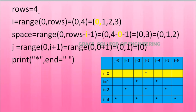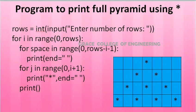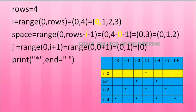Let's trace the execution with rows=4. i iterates range(0, 4), giving 0, 1, 2, 3. For i=0 (first row): space iterates range(0, 4-0-1) = range(0, 3), giving 0, 1, 2 — so 3 spaces. Then j iterates range(0, 1), giving 0 — so 1 star is printed.